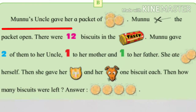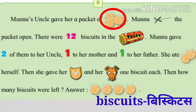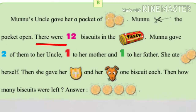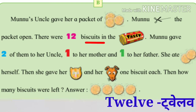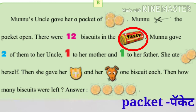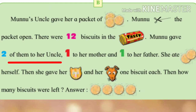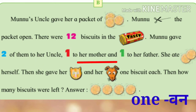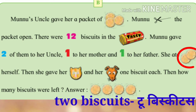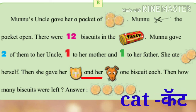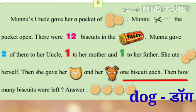Munnu's uncle gave her a packet of biscuits. Munnu cut the packet open. There were twelve biscuits in the packet. Munnu gave two of them to her uncle, one to her mother and one to her father. She ate two biscuits herself.